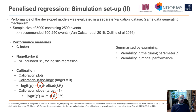We assess the performance of these developed prediction models in a separate validation dataset using the same data generating mechanism with a large sample size. Performance measures include the C-index, Nagelkerke R², calibration plots, calibration in the large, and the calibration slope. We summarize the simulations by focusing on the variability in model performance — not which method achieves the highest performance measures on average, but rather the variability across simulations and the variability in the tuning parameters.